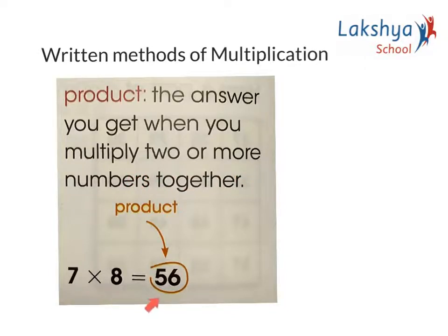Example: 7 × 8 is 56. 56 is the product.